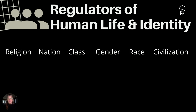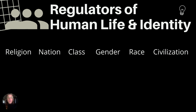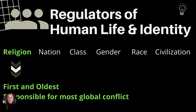They have also been the source of conflict and confrontations between these unique groups of people. In 2013, Sir David Cannadine put forth six forms of regulators of human life and identity. Let's take a closer look at each of these.